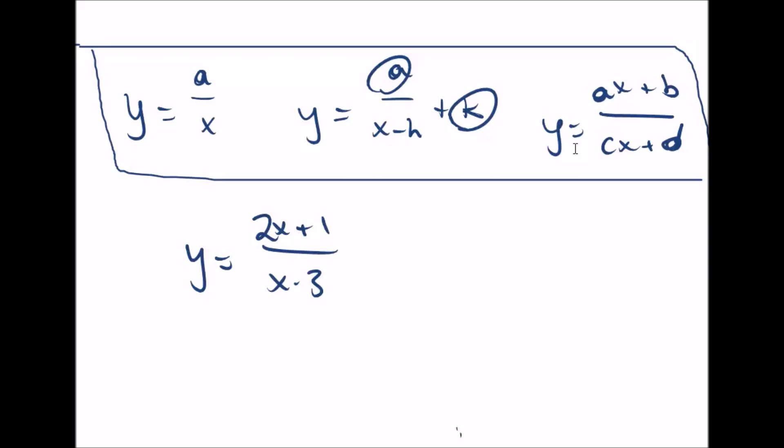So now we're going to take a look at the last form, y equals ax plus b over cx plus d. So we looked at the easy, medium, now we're looking at the hardest one.